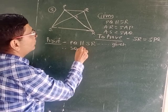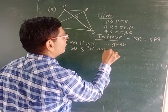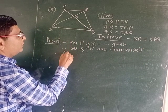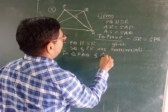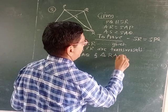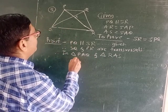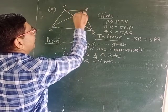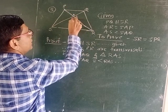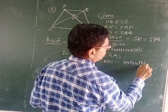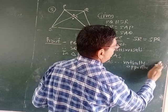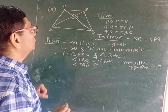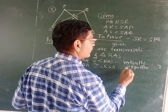Since PQ is parallel to SR, SQ and PR are transversals. Therefore, in triangle PAQ and triangle RAS: angle PAQ is equal to angle RAS because they are vertically opposite angles — statement 1. And angle PQA is congruent to angle RSA as alternate angles — statement 2.